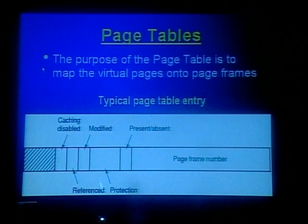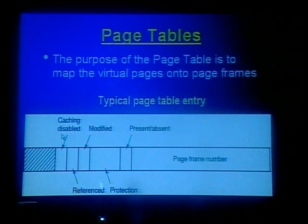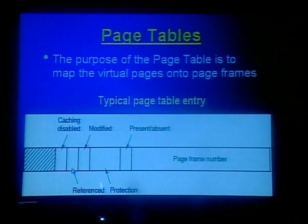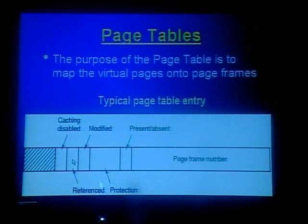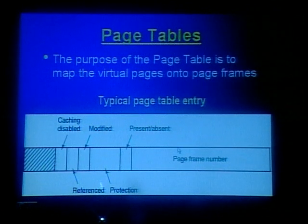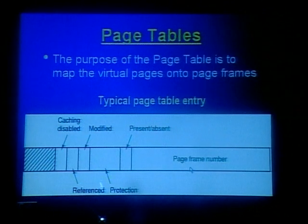We keep track of the virtual address space and physical memory addresses with the help of a page table. The primary purpose of the page table is to map virtual pages onto page frames. The page table entry includes: a caching disabled bit, a referenced bit (set to 1 if the page is referenced, 0 if not), a modified bit (set to 1 if modified, 0 if not), a protection bit, a present/absent bit, and the page frame number.